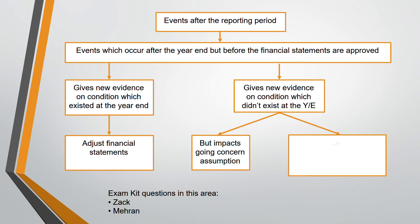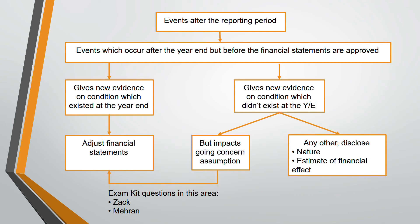For non-adjusting events, you have to consider two things. First, if it impacts the going concern assumption — even though there was no condition at year-end — you have to adjust the financial statements. Second, if it is a non-adjusting event that does not impact going concern, you must disclose it: the nature of the event and an estimate of the financial effect. But if it affects the going concern assumption, you must adjust the financial statements, even if the condition did not exist at the year-end.